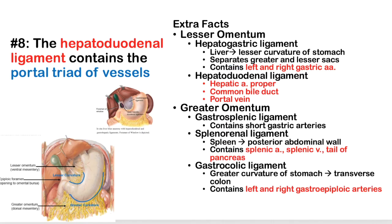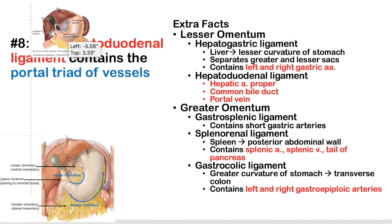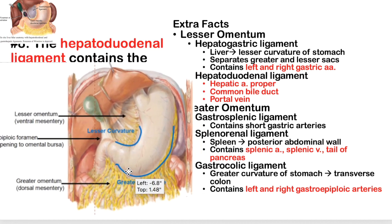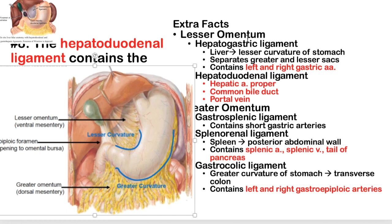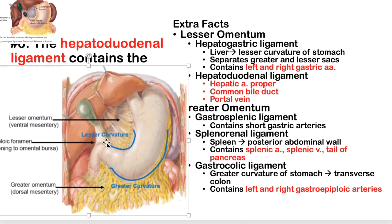Fact 8: The hepatoduodenal ligament contains the portal triad of vessels. The lesser omentum is made up of two ligaments: the hepatoduodenal ligament (from liver to duodenum) and the hepatogastric ligament (from liver to lesser curvature of the stomach). Behind these ligaments is a little pouch, and the opening into that pouch is the epiploic foramen, or foramen of Winslow.